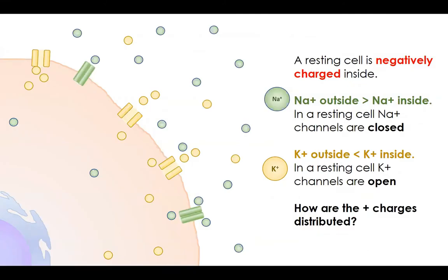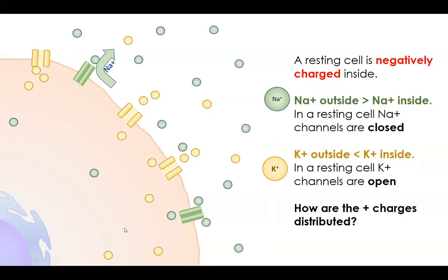A resting cell is negatively charged inside relative to the outside. Let's pay attention to one ion at a time. Our green ions are sodium ions, and we know that the sodium concentration outside the cell is greater than the concentration inside the cell. Our concentration gradient therefore wants these ions to move inward. They can't diffuse through the membrane because they're charged, and in a resting cell their channels are closed — sodium may want to go in, but it cannot.